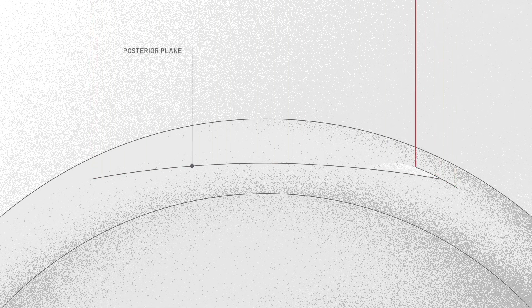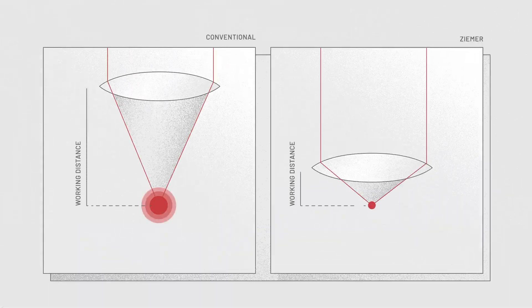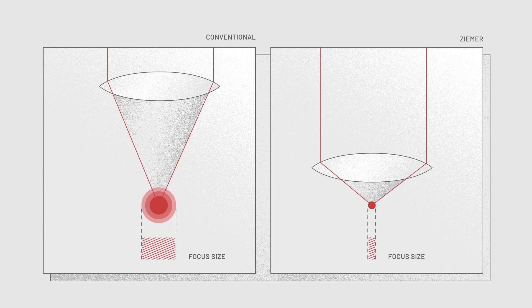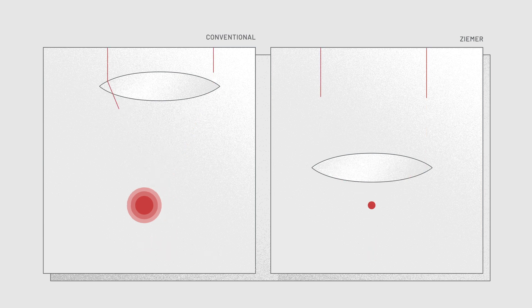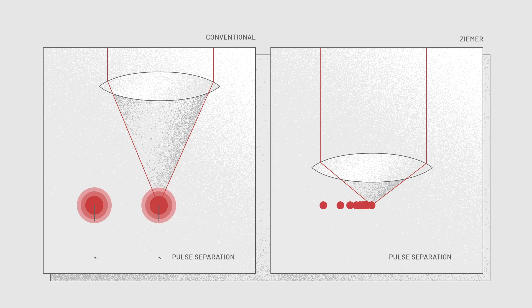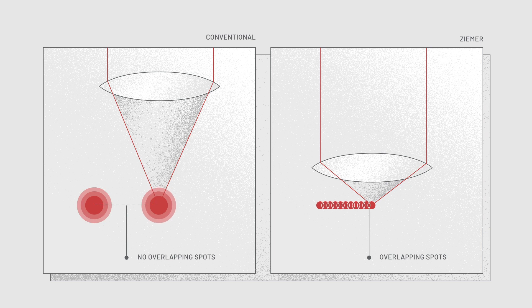The Z8 creates a lenticule inside the corneal stroma. Thanks to the short working distance to the eye, the focus size is very small and thus the energy required for each laser pulse is low. In combination with overlapping spots, this produces a uniquely smooth and even cut, a feature Ziemer is known for.